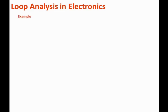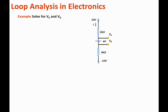Let us have another loop analysis example. In this example we have the circuit that is shown here. We are asked to solve for VA and VB. In this example we have two supply voltages: a positive power supply located at the top of the circuit and a negative power supply located at the bottom of the circuit.